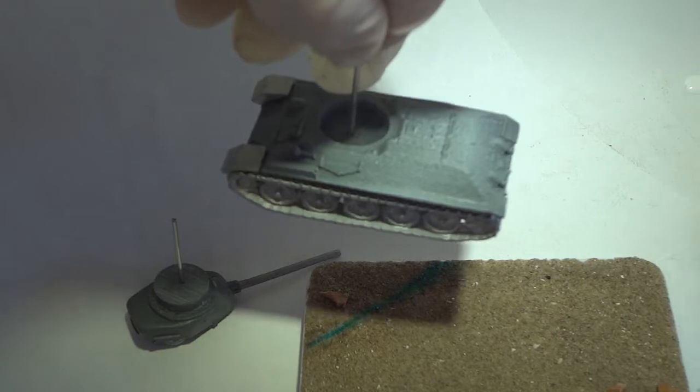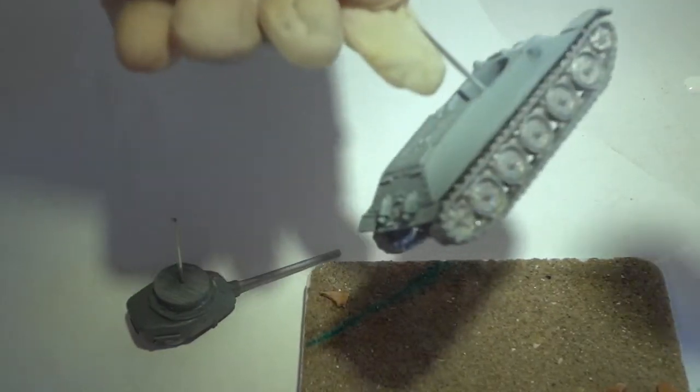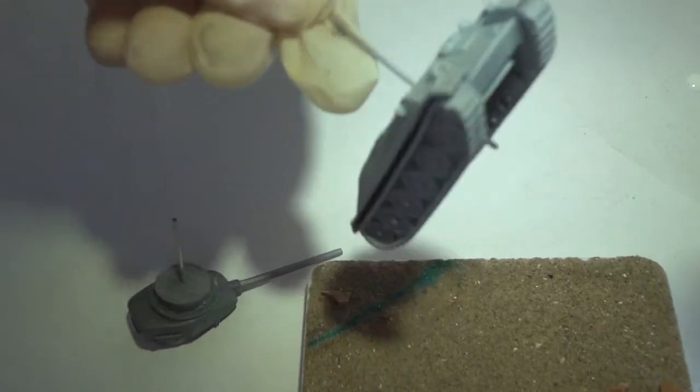Using my airbrush, I prime all of the components using Vallejo Game Color White Primer thinned down to a ratio of 1 to 1 paint to Windex.